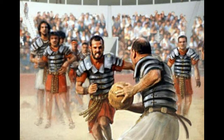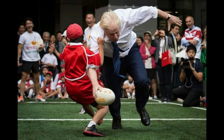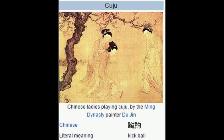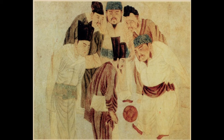Football was started being played all around the world in different forms. Some used to be played in the form of rugby, some in other forms like throwing a ball or kicking a ball from one side to another across a line to score a goal.